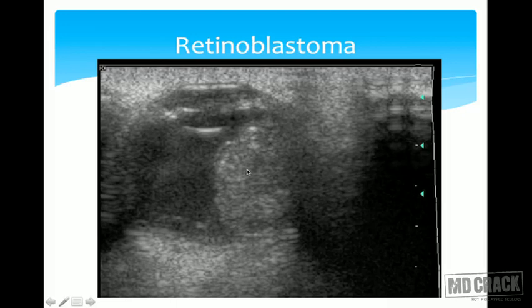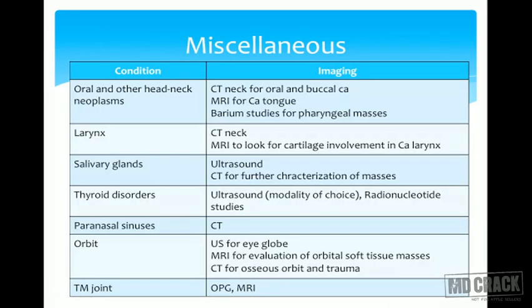A patient with retinoblastoma shows a lobulated lesion on ultrasound. In summary for head and neck neoplasms: CT neck is done for oral and buccal carcinoma; MRI for carcinoma of the tongue; various studies for pharyngeal masses; and CT or MRI for carcinoma of the larynx to assess cartilage involvement.